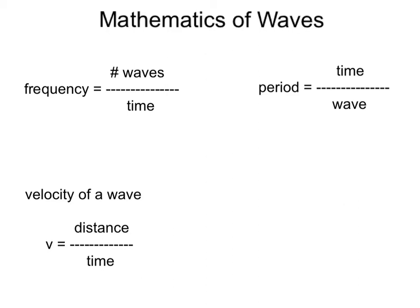Mathematics of waves. As you saw in the definitions of frequency and period, they are the inverse of each other. The frequency is the number of waves per time, whereas the period is the amount of time for one wave. Thus, we can write these as the inverses of each other: frequency is the inverse of the period, and the period is the inverse of the frequency. So if you know one of these, you can find the other.